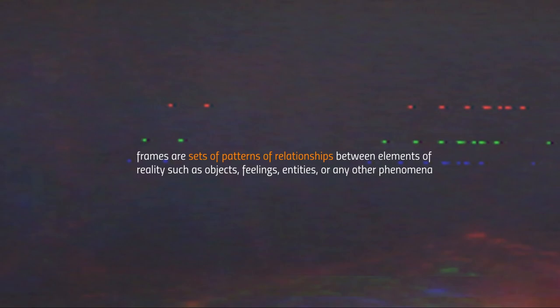Frames can be made from any phenomenon — you can use any elements of reality to construct a frame. This can be objects, feelings, other entities, living beings, or any other phenomena, because perception operates on the basis of information. Any and all stimuli hitting a perception window are interpreted as information stimuli, so when making a frame any objects, feelings, or ideas can be used to construct it and to construct associative chains.